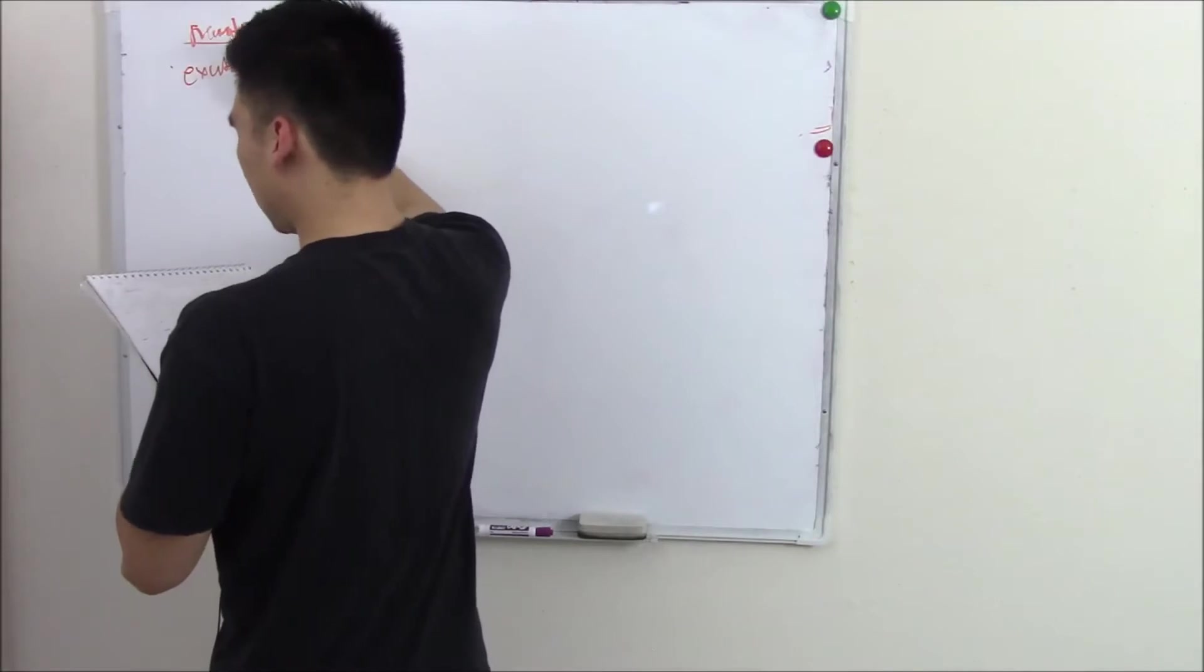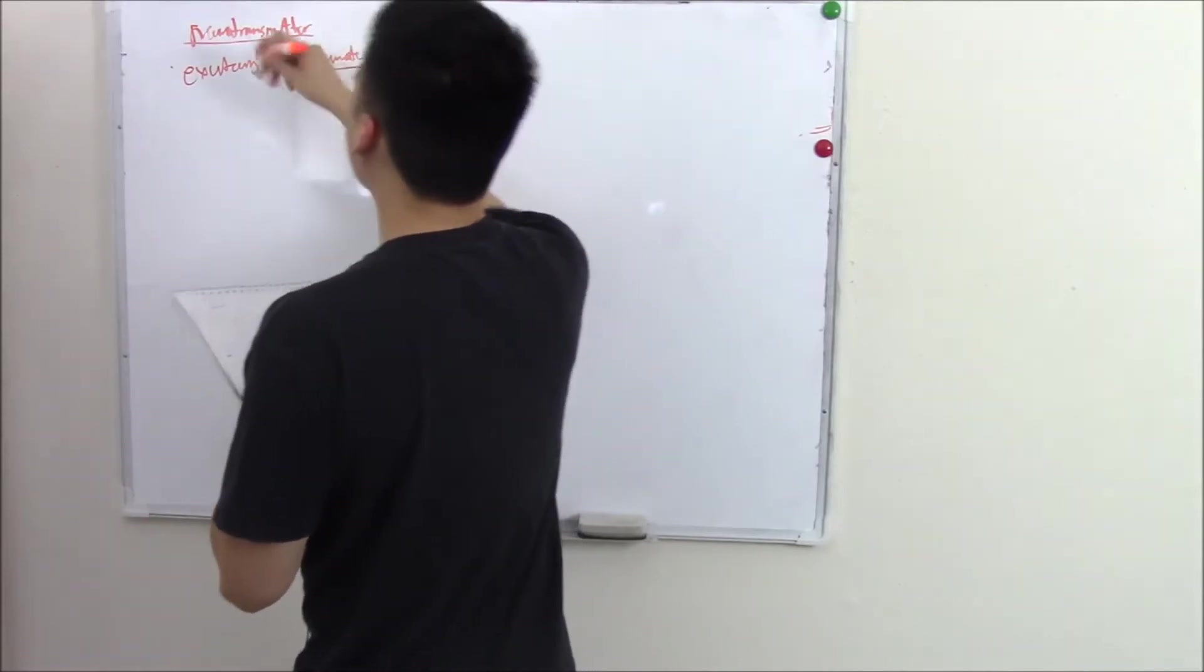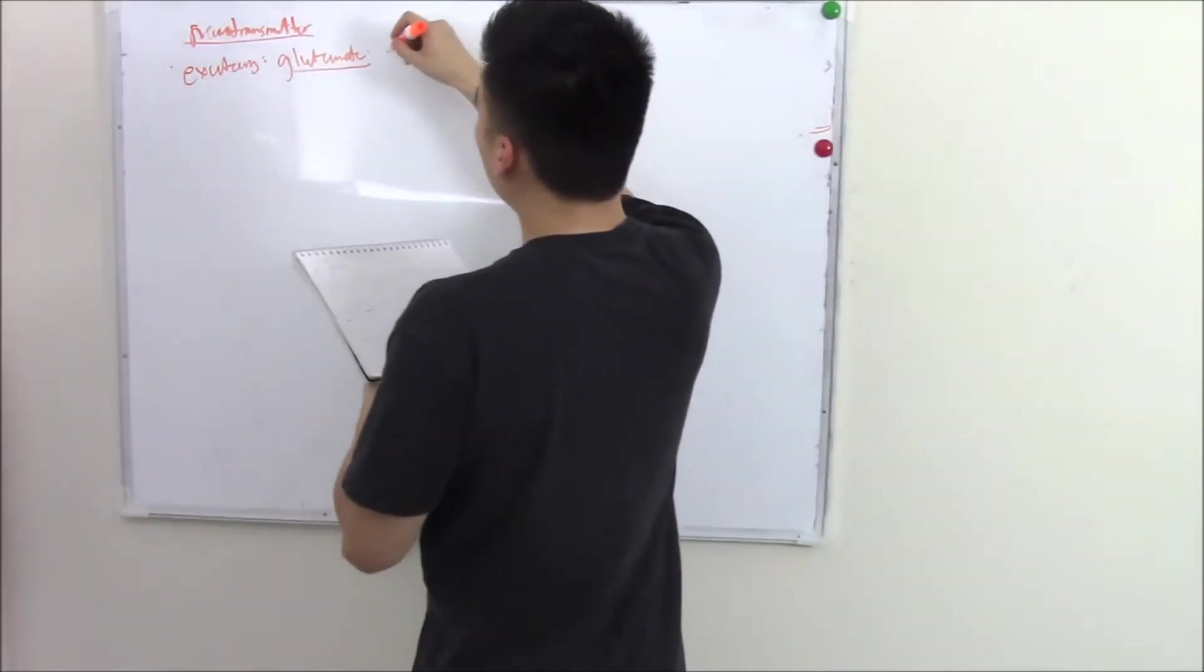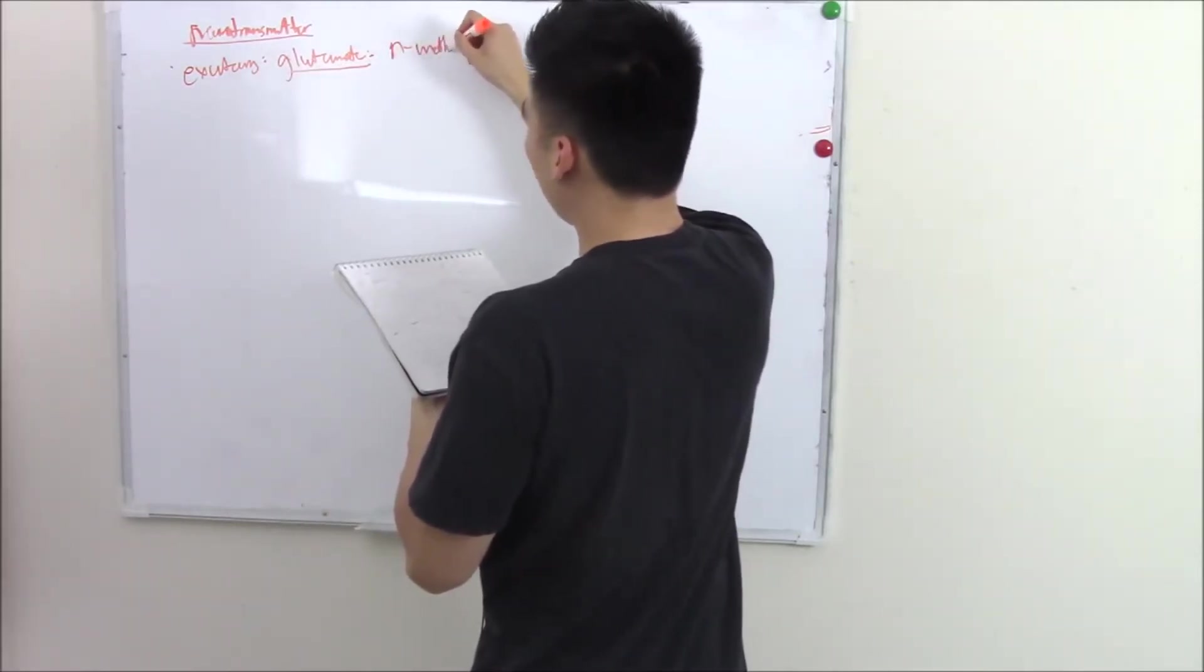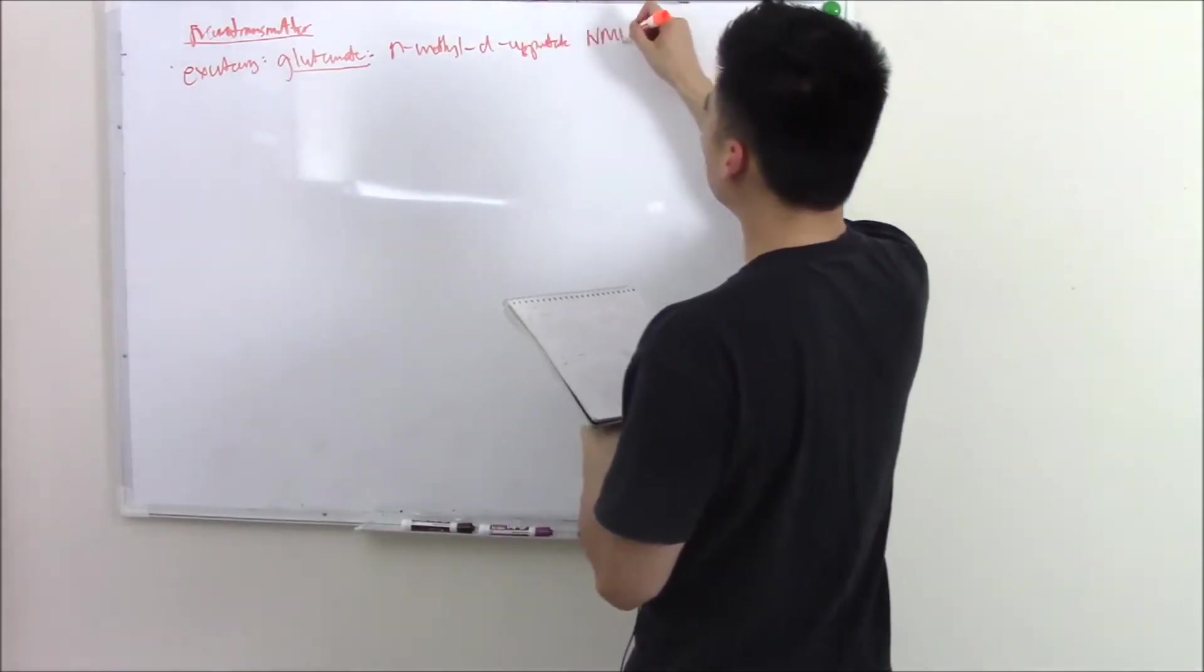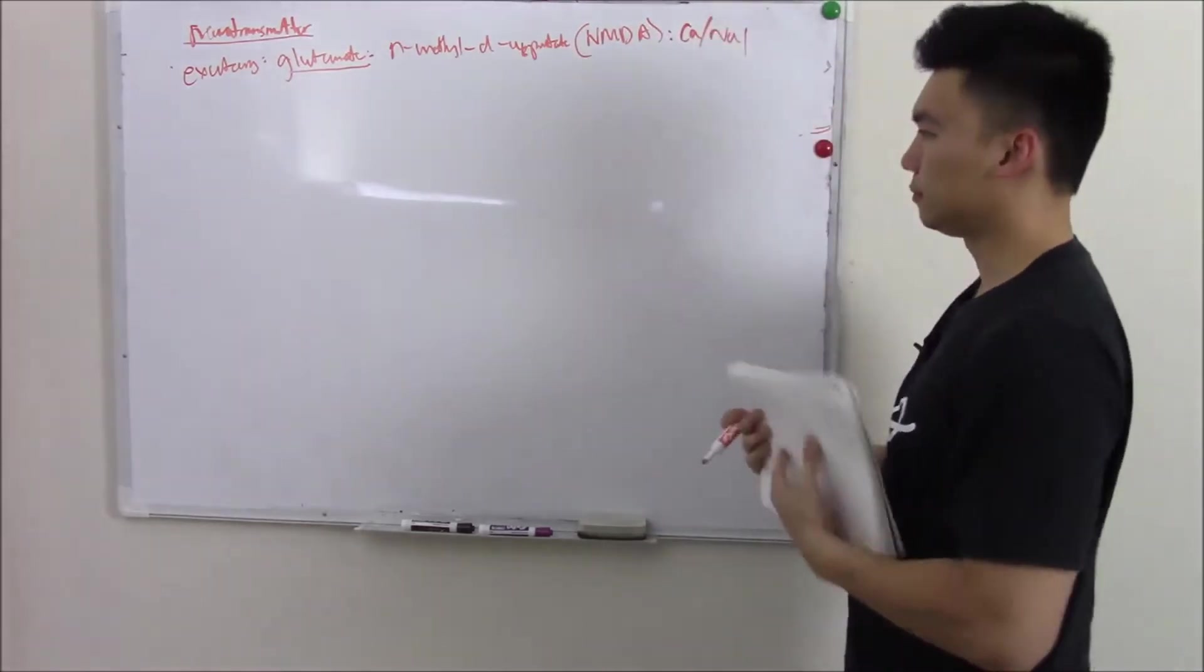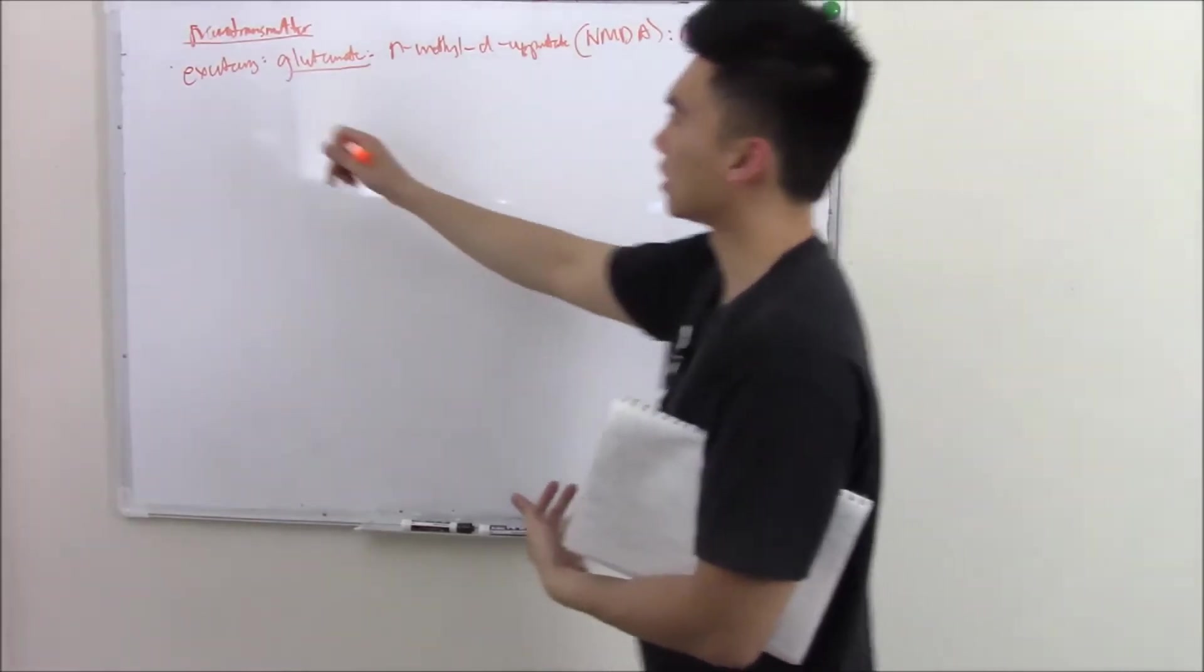Excitatory is glutamate. Glutamate, you can make from your TCA cycle, your Krebs cycle. And glutamate will hit various receptors. One of the big ones is N-methyl-D-aspartate receptors or NMDA. When it hits cells, it'll influx things like calcium and sodium and depolarize whatever neuron it needs to depolarize. That's what makes it excitatory.